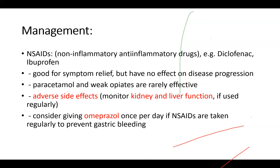What patients really love is non-steroidal anti-inflammatory drugs, for example diclofenac or ibuprofen. They are very good for symptom relief, but they have no effect whatsoever on disease progression. Paracetamol and weak opiates are rarely effective — tramadol is not working. Non-steroidals have a high risk of adverse side effects, so you need to monitor kidney and liver function if the patient uses them regularly. Consider giving omeprazole once per day if non-steroidals are taken regularly to prevent gastric bleeding.